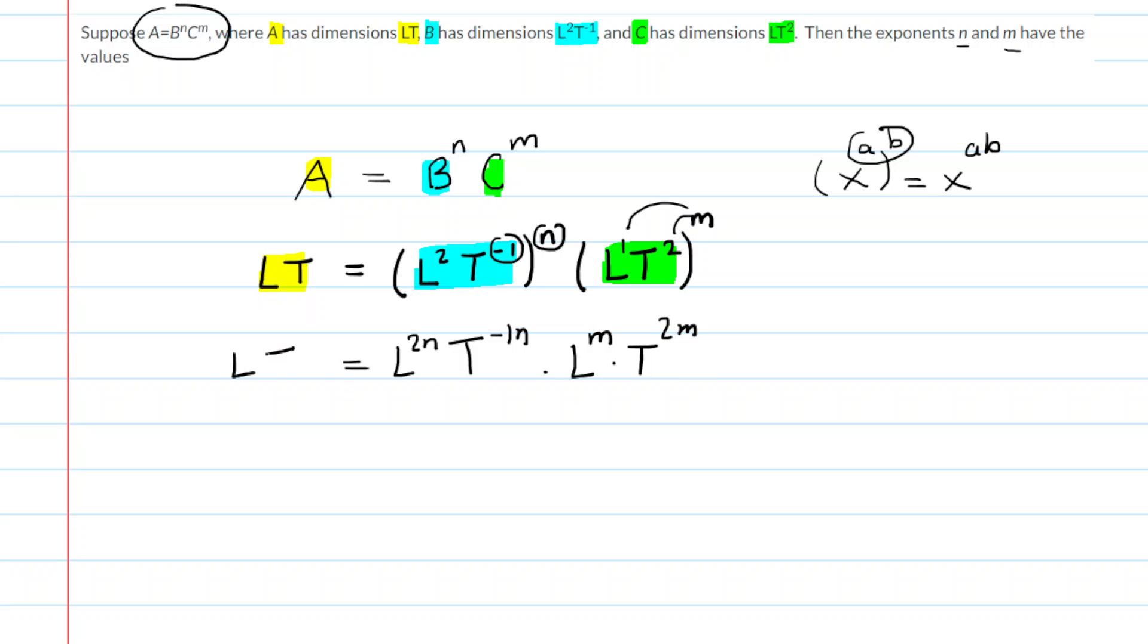Now, looking at the right hand side, we can actually simplify a little bit because you have l to the power of 2n multiplied by l to the power of m. Recall another property of exponents that says when you multiply x to the power of a and x to the power of b, you end up simply adding those powers. So you have x to the power of a plus b in that little example.